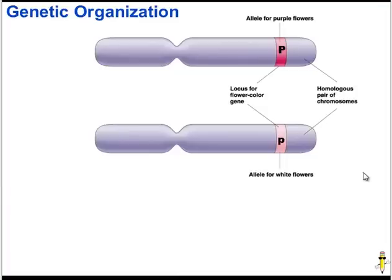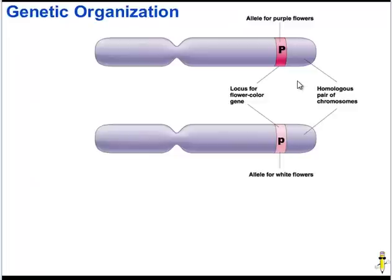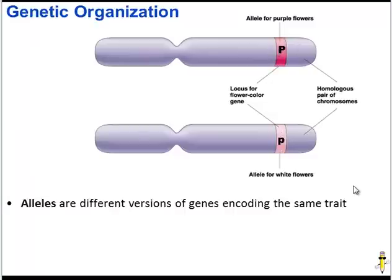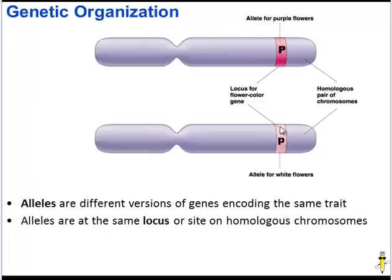In order to understand why this happened, let's review how genes are organized. In eukaryotes, there are homologous pairs of chromosomes. On this pair of homologous chromosomes are the genes for flower color. Since there are two chromosomes in a homologous pair, there are two different genes that encode flower color, and the genes may or may not be identical. These are alleles — different versions of genes that encode the same trait. Alleles for the same trait are found at the same spot, or locus, on a homologous chromosome.